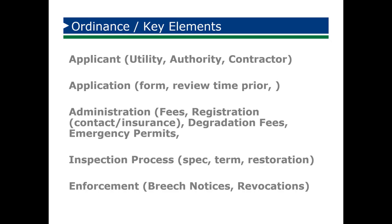Let's talk about some key elements of the ordinance itself. Obviously we're going to have an applicant that we need to identify and really define in our ordinance. This is important when you think about who's involved in cutting that utility crossing. Is it the utility themselves doing the work? Is it one of the authorities operating within your community? Or is it a contractor? If you don't ask for or know who the applicant is, you wouldn't know who to actually contact or who is responsible for making sure that work gets done. You also want to know who should be submitting that application and their contact information in the event of an emergency, as well as who should be providing the insurance certificates of liability that protect you from their work.